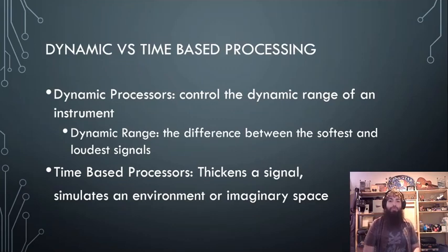So signal processors usually come in one of two different types. These types are dynamic versus time-based processing. So our dynamic processing, those usually control the dynamic range of an instrument. Dynamic range is effectively the difference between your loud parts and your soft parts. So like a compressor is going to decrease the dynamic range where the whole thing can be increased in volume, which is pretty cool.